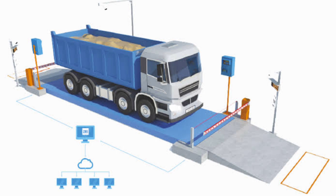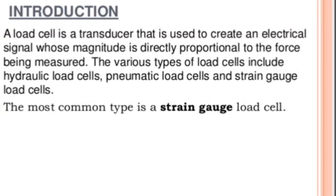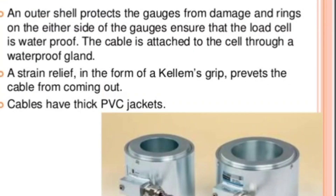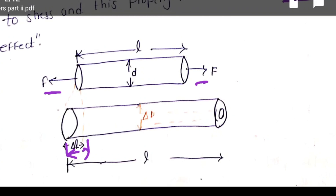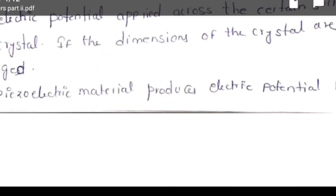The various types of load cells we are using are: hydraulic load cells, pneumatic load cells, and strain gauge type load cells. The most common type in weighing bridges — you can see these in township areas to weigh lorry or vehicle weight — we are using load cell strain gauges. These are some types of load cells used in weighing bridges. Outer cells protect the gauges from damage. When you apply the force, the resistance of the material changes by changing the dimensions — length or diameter, R equal to rho L by A. The strain gauge works on this principle.